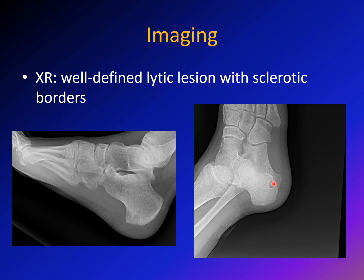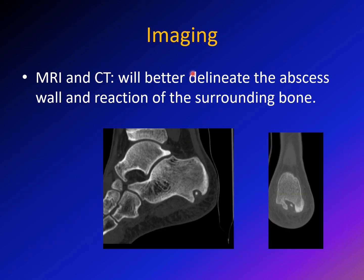Here is a small osteolytic lesion surrounded by a sclerotic border. CT and MRI can better delineate the lesion. In this patient, the Brodie's abscess has a sinus — a rare finding — where the lesion communicates with the tissues surrounding the bone. You can see the area of necrosis surrounded by a well-defined sclerotic border.